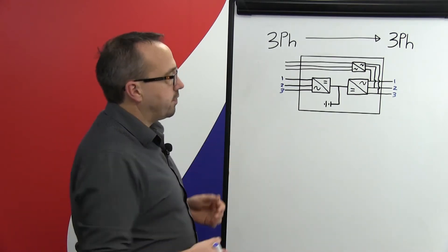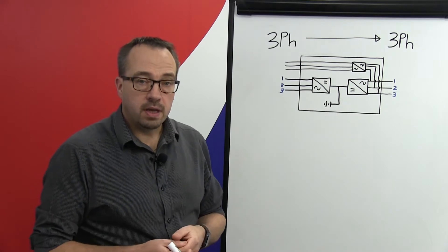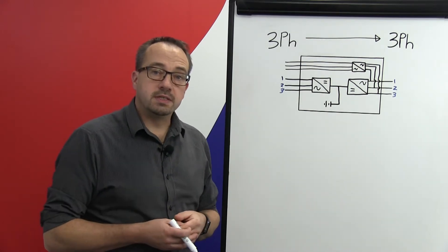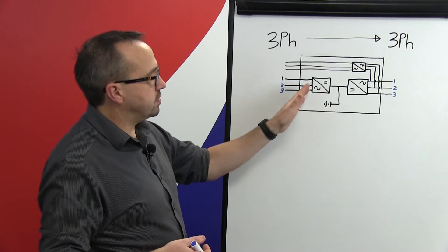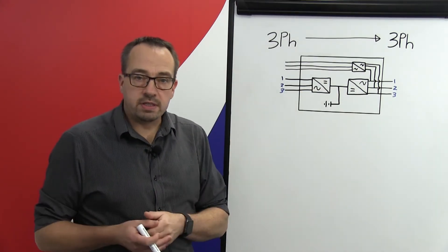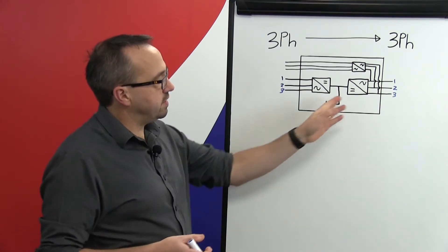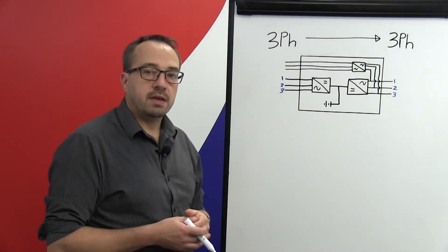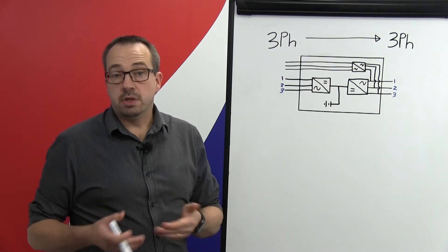Now on the board here we have a very basic diagram of an online dual conversion UPS system. The online dual conversion UPS system operates simply by taking the AC voltage from the main supply, converting the AC voltage to DC voltage via the rectifier which is referred to as the first conversion. We then reconvert that DC voltage back to AC voltage again via the inverter which is referred to as the second conversion and hence the term dual conversion.